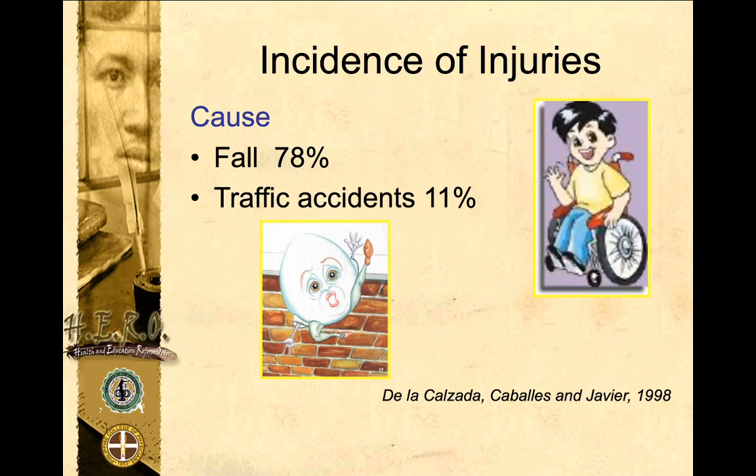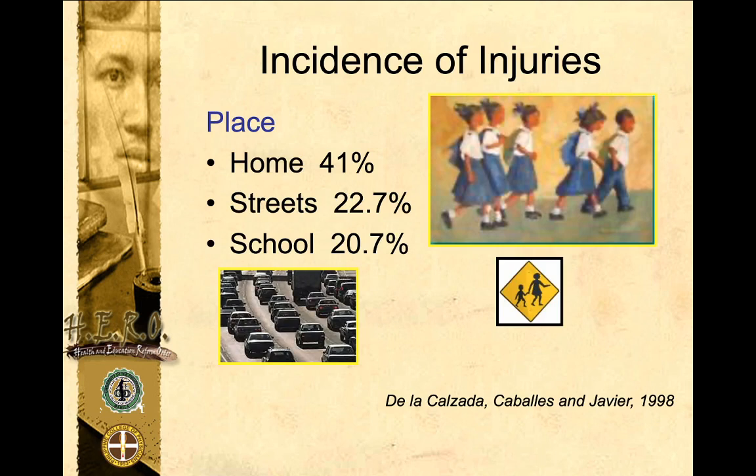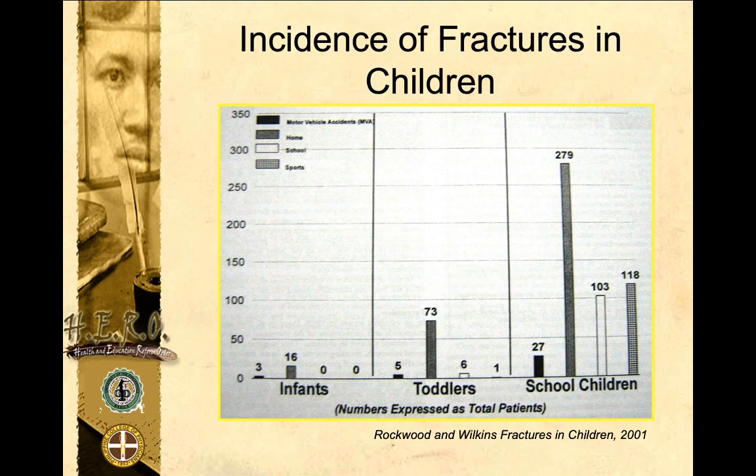The primary cause accounts for around 17%, followed by traffic accidents at around 11%. School accounts for around 20.7% of place of injuries, followed by streets, and still the highest would be at home, as also shown in this diagram with the bar graph — home remains the main area for accidents.